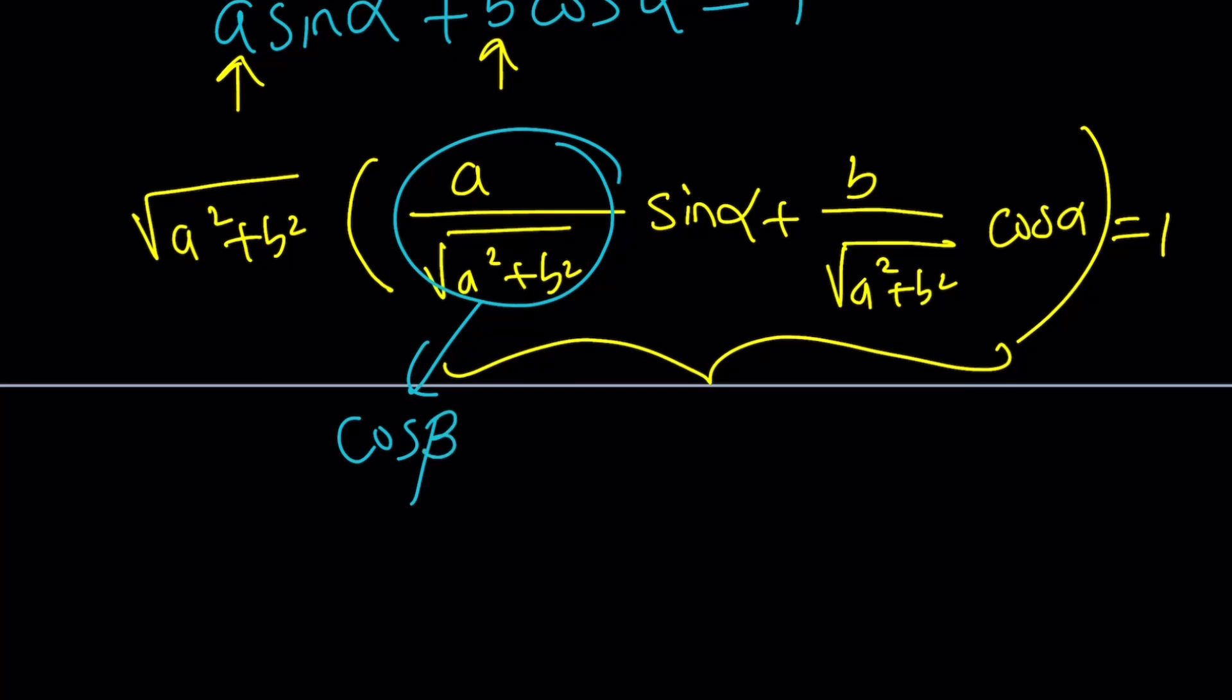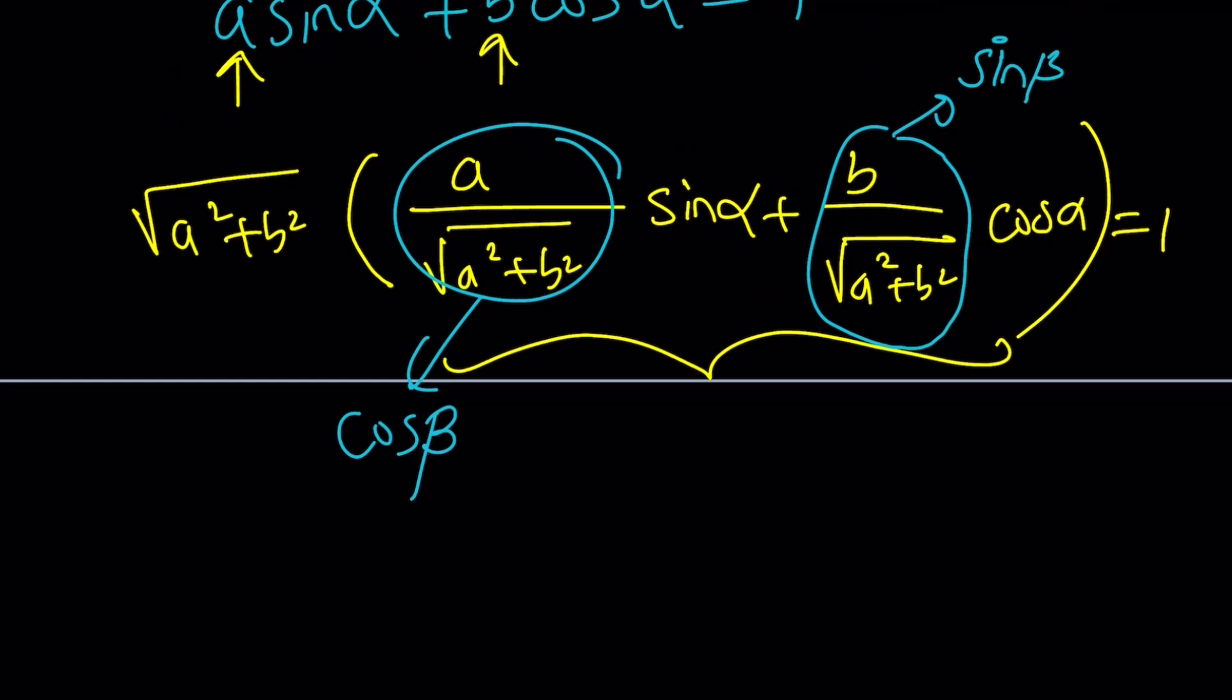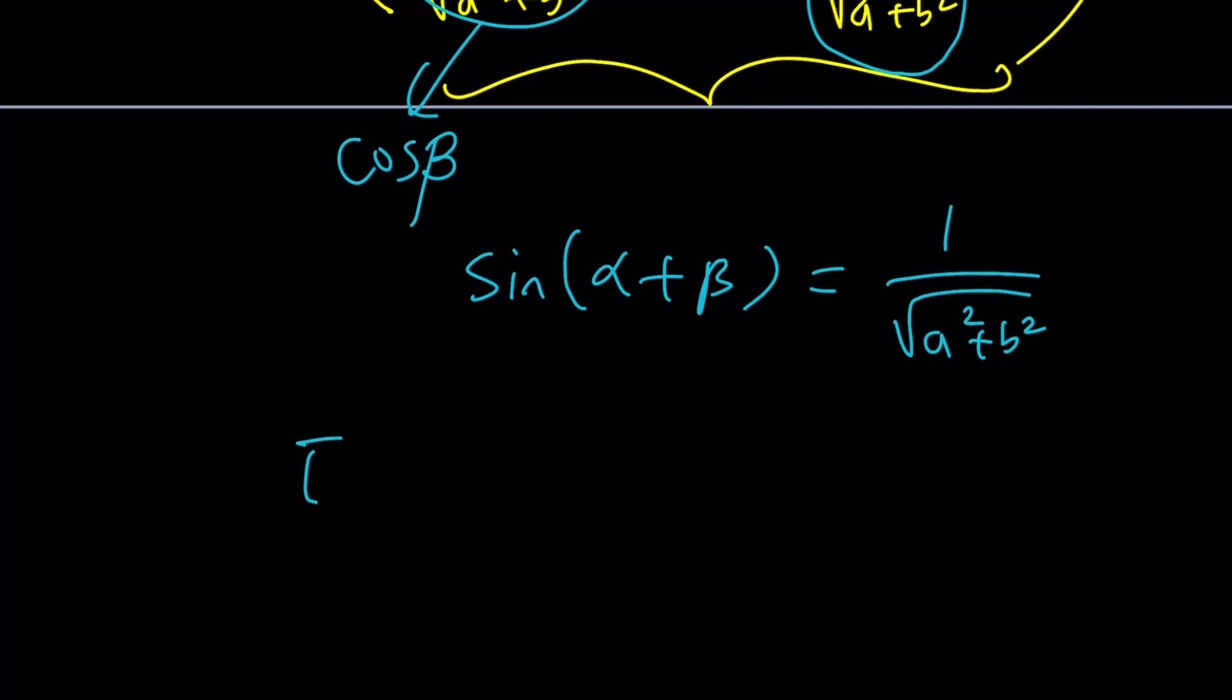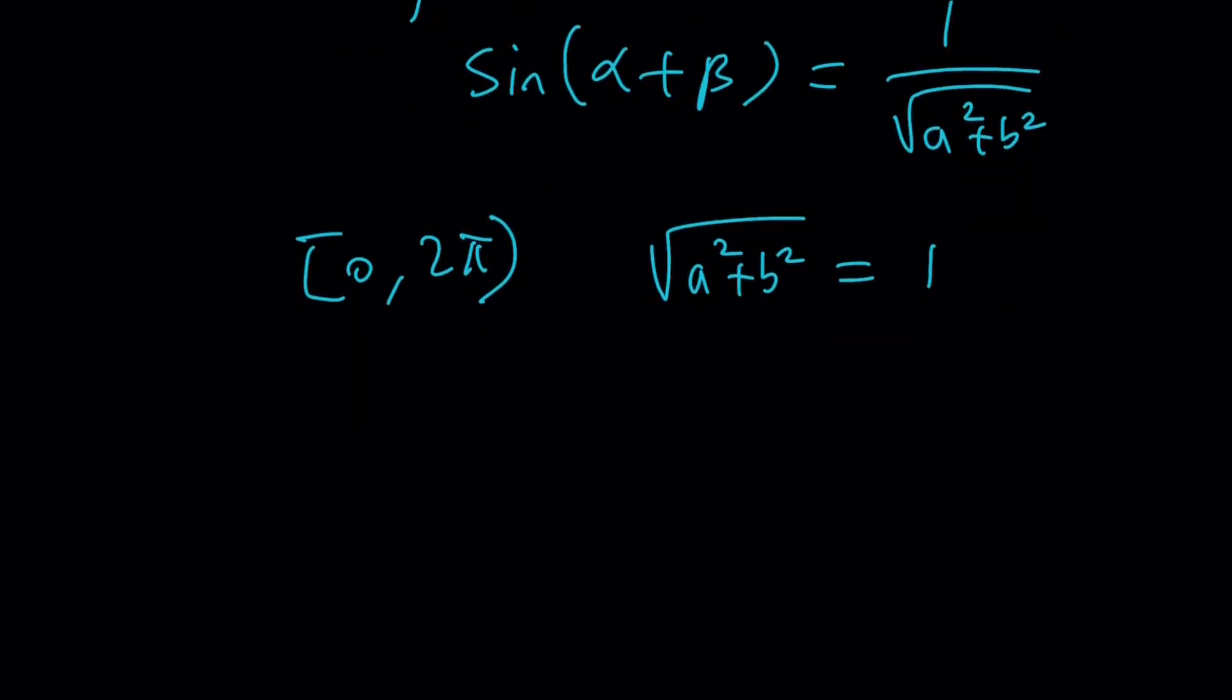And guess what? From here you're going to be getting sine alpha plus beta. Of course, that is multiplied by square root of a squared plus b squared. But let's go ahead and divide both sides by that. And guess what? Here's the trick. Sine alpha plus beta will take two values on zero to two pi, that interval. The only exception is one and negative one. But obviously the radical cannot be negative one. So the only way out of this is to set this equal to one. That's the only case where we're going to have one solution. And that means a squared plus b squared equals one. And that's basically our solution.